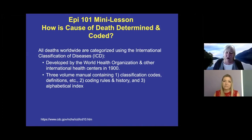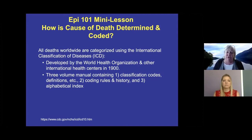Deaths are categorized — all deaths worldwide, across all countries — using the International Classification of Diseases, which we call ICD. They were developed by the World Health Organization and some other international health centers in the 1900s. The ICD includes three volumes: the first has all the different codes and definitions; the second is strictly on coding rules and the history of ICD codes; and the third is an alphabetical index.